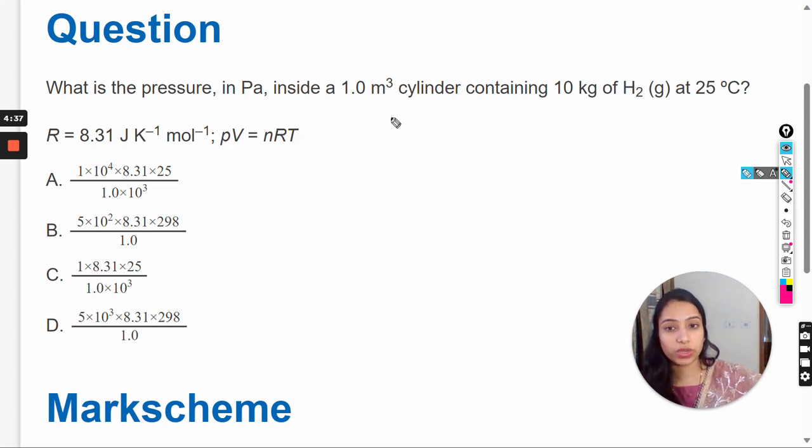So according to the equation, we can write it like this. If you want to calculate the pressure, we can write it like this: nRT upon P.